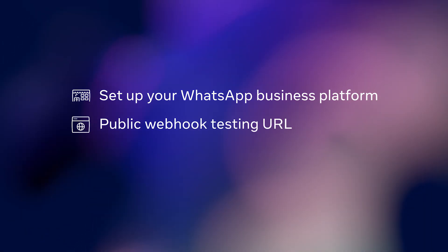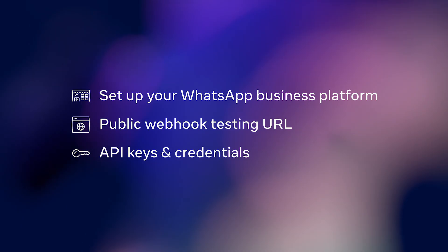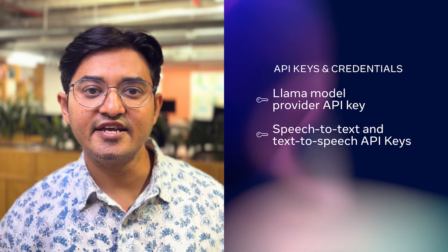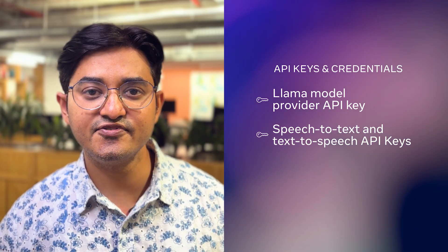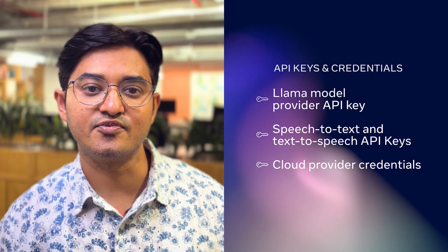Next, you will need a way to test your webhook. For this, you will want a publicly accessible URL that WhatsApp can use to send webhook events to your backend. There are several ways to do this — just choose a method that works for your environment and security needs. You will also need API access for a few core services: first, an API key for your Llama model provider — in this demo we are using Together AI, but you can choose any provider you prefer. Second, an API key for speech-to-text and text-to-speech services if you want your bot to handle audio. And third, if you are deploying your backend in the cloud, make sure you have credentials for your chosen cloud provider.